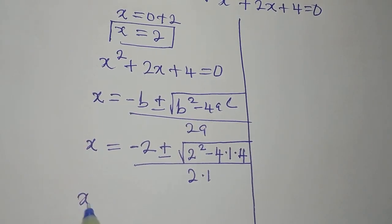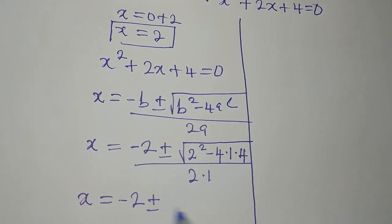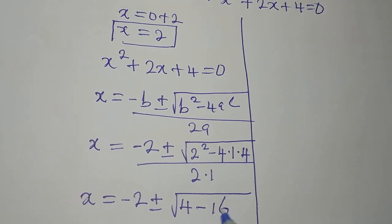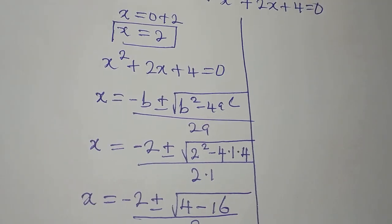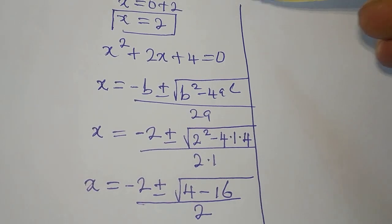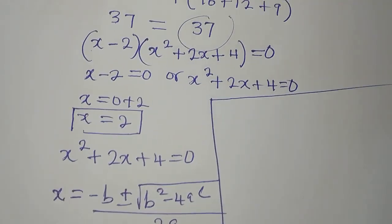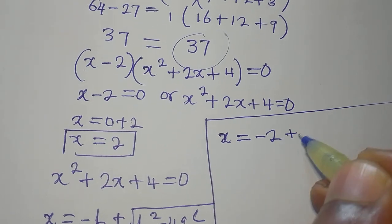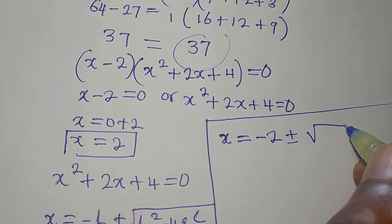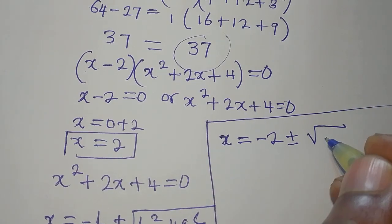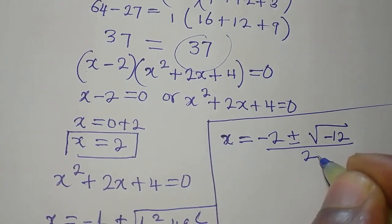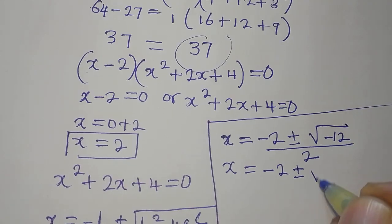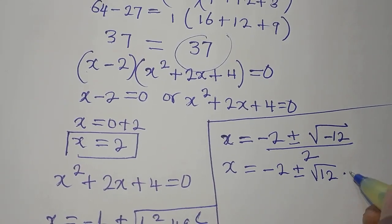So x equals minus 2 plus or minus the square root of 4 minus 16, all over 2. That gives us minus 2 plus or minus the square root of negative 12, over 2. We continue: x equals minus 2 plus or minus the square root of 12 times the square root of negative 1, over 2. The square root of negative 1 is i, and 12 is 4 times 3, so we get minus 2 plus or minus square root of 4 times square root of 3 times i, over 2.